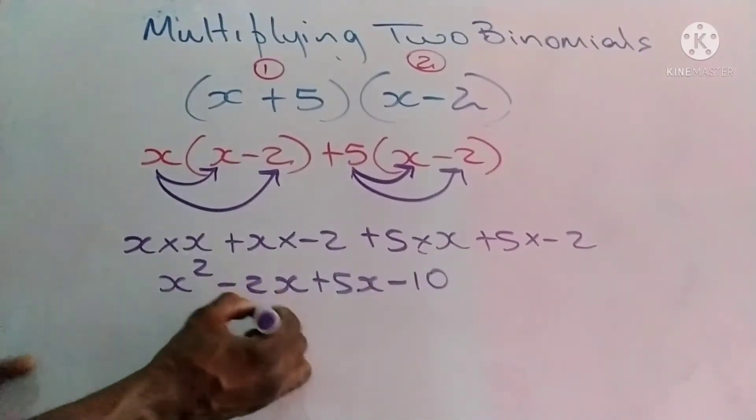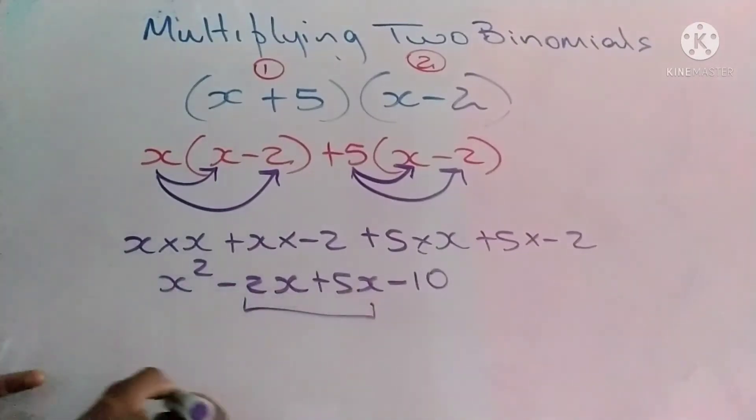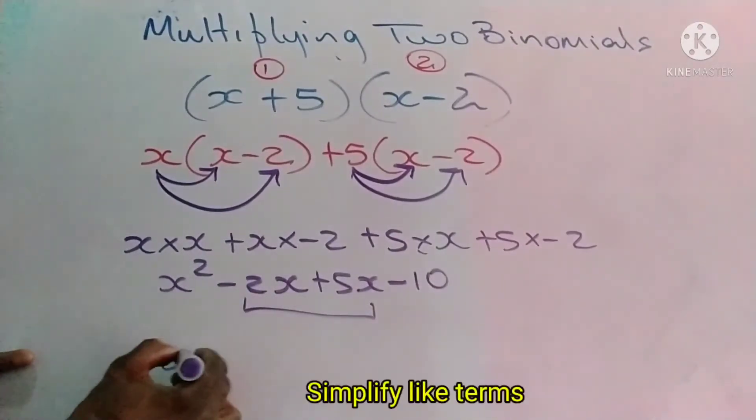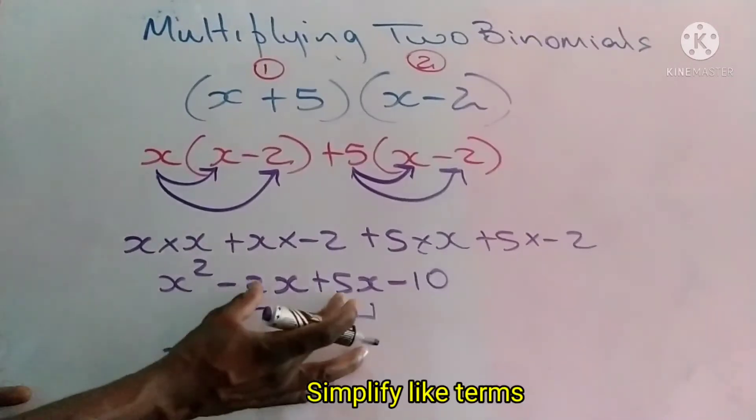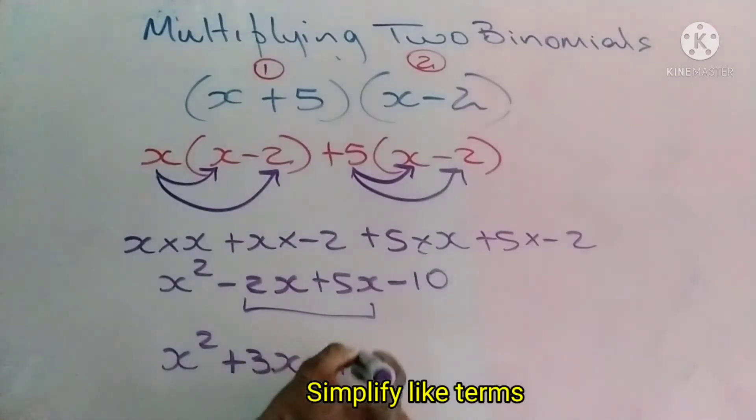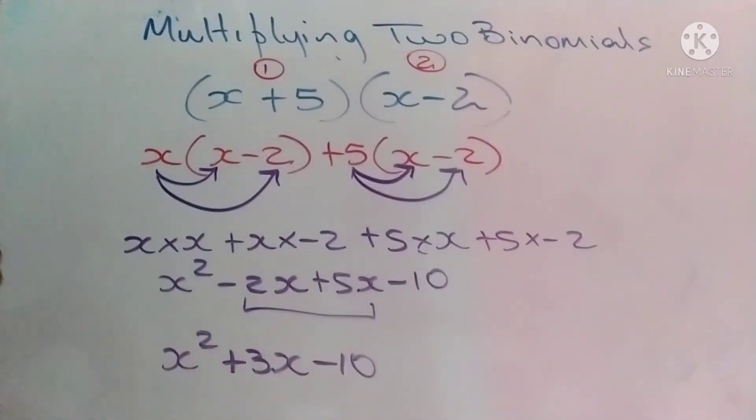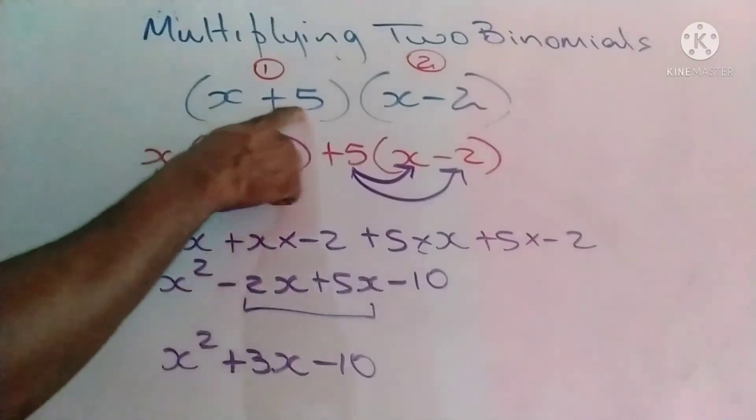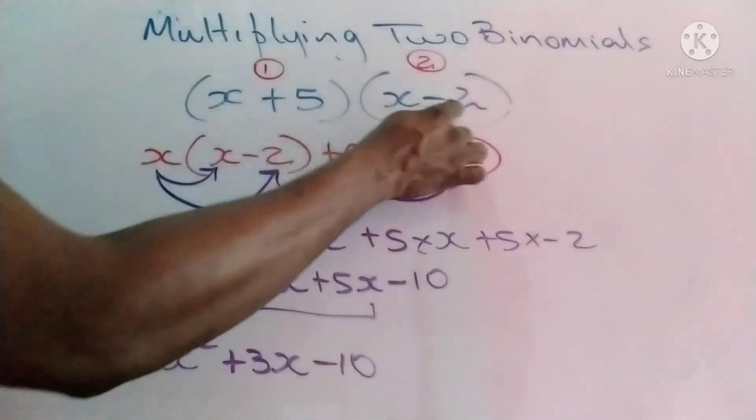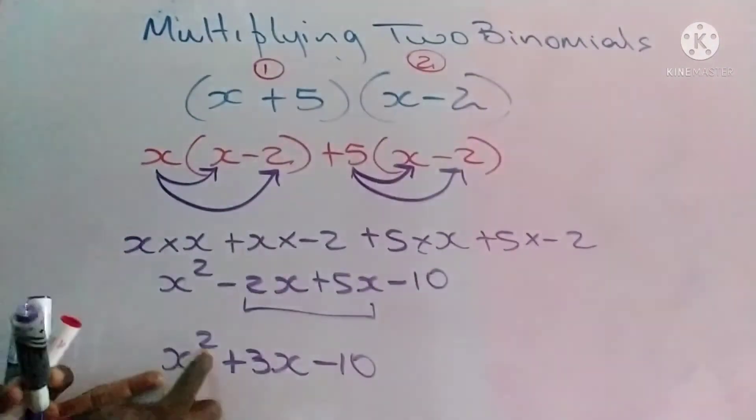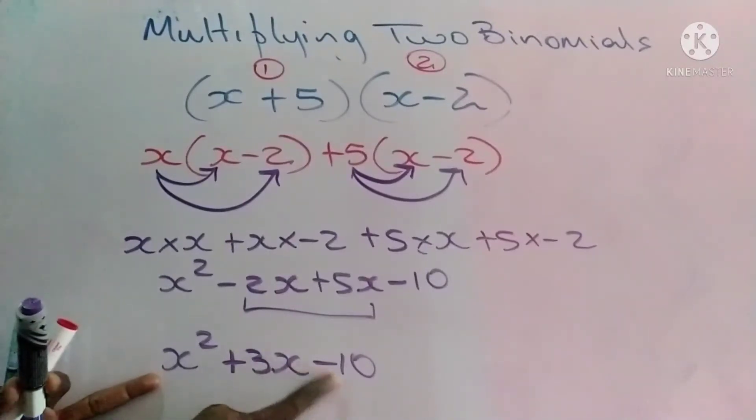5 times negative 2 becomes negative 10. We can simplify because we have like terms. Finally, x squared, when you add these two terms, we get positive 3x minus 10. When you multiply (x + 5) times (x - 2), the result is x² + 3x - 10.